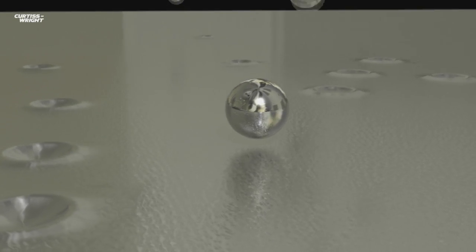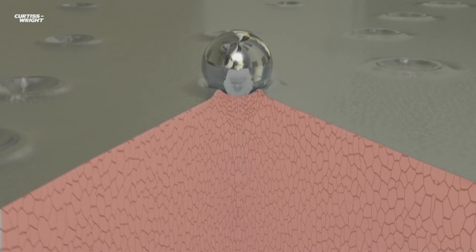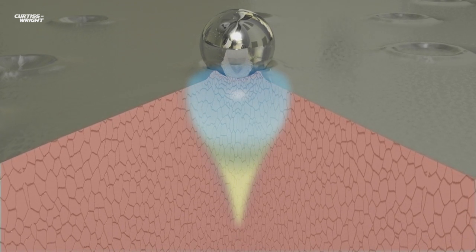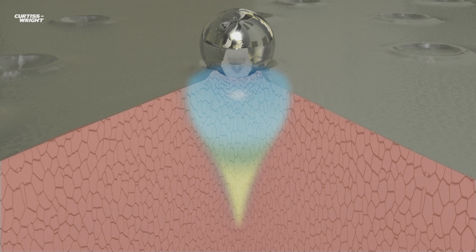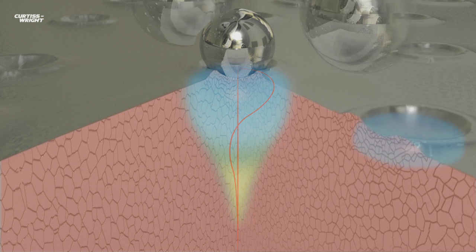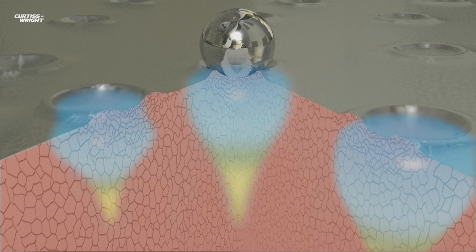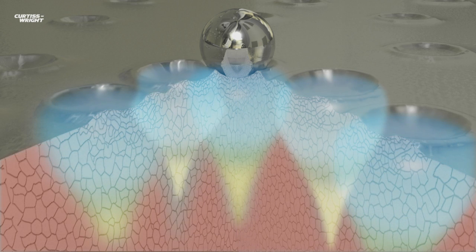The resulting dimple stretches and yields the material, inducing various magnitudes of beneficial compressive stress whilst removing harmful tensile stresses. Controlled shot peening can remove tensile stresses induced by machining, welding or heat treatment.